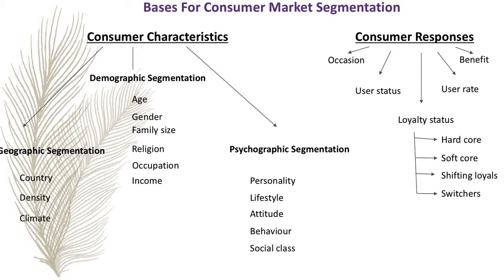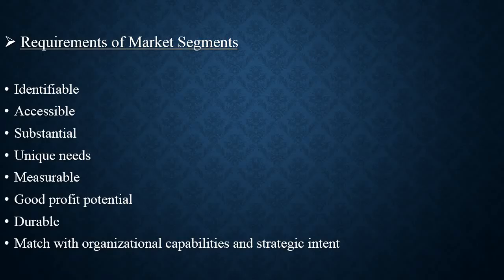On the basis of loyalty status, there can be different types of loyalty towards organizational products. Some consumers are hardcore loyals, while some are soft core loyals, some are shifting loyals, and some are switchers. So whenever you are dividing the market into a segment, the segment should be identifiable, accessible, substantial, unique, measurable, should offer a profit, be durable, and should match with the organizational capabilities, objectives, and strategic intent.